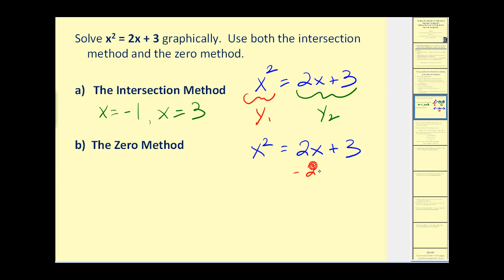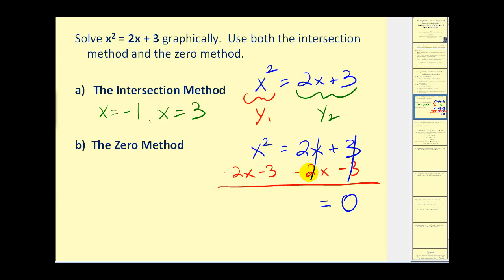We subtract two x on both sides and also subtract three on both sides, so the right side equals zero and the left side becomes x squared minus two x minus three. On the zero method we only graph one function — the left side — and look for the x-intercepts, or zeros, of x squared minus two x minus three.